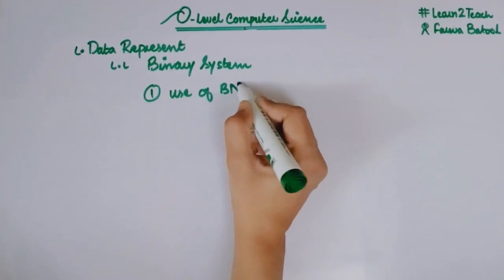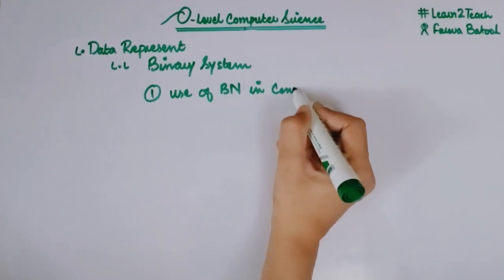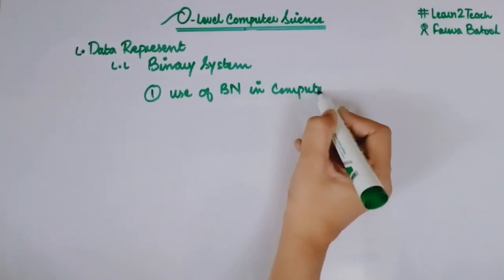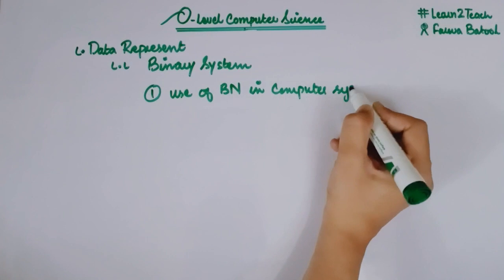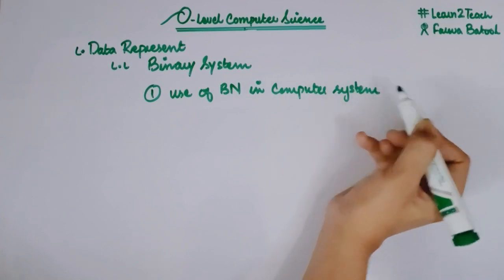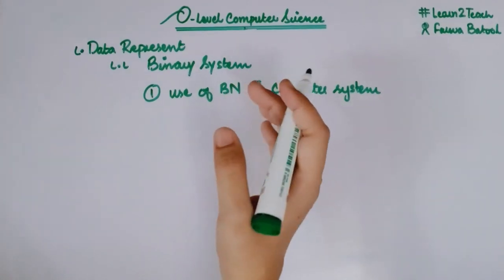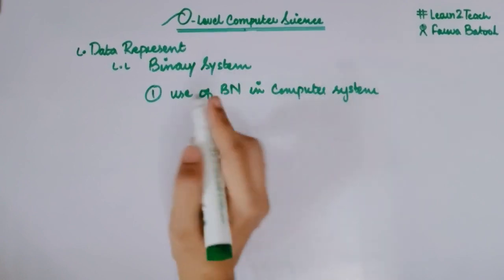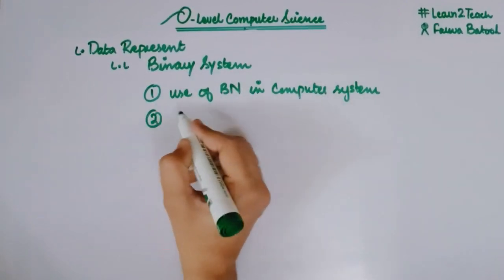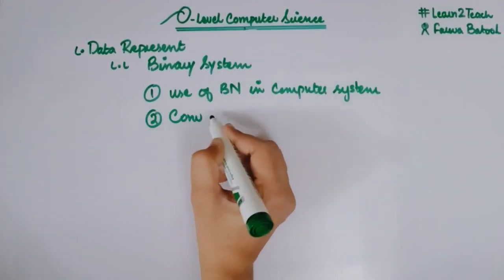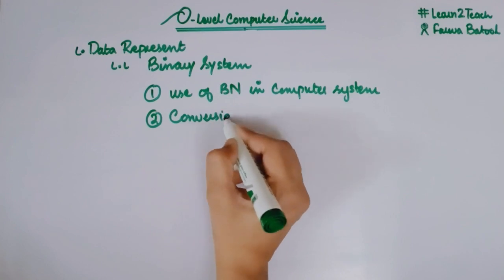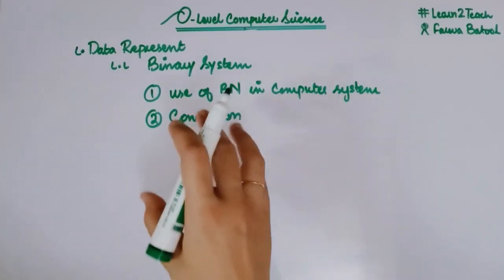Number in computer system. A student must know why binary numbers are being used, what is the significance of it in computer systems. The second thing is about conversion—how binary numbers can be converted into decimal or vice versa.